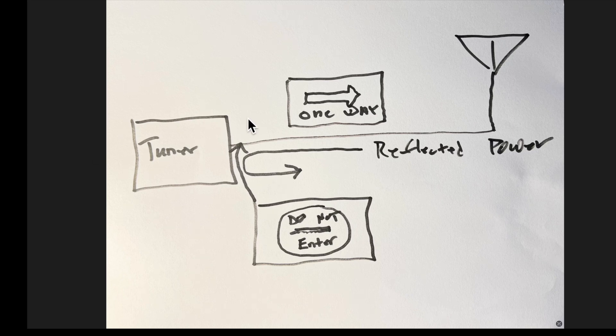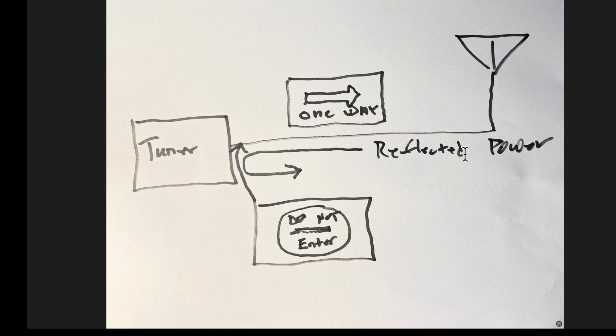So what happens to reflected power? This is where the myths come in. Some say it all turns to heat in the transmission line, or at the source, like an antenna tuner. Here's why neither is true: the impedance match created by the tuner is only one way — from the source to the load. So when a reflected wave arrives back at the antenna tuner, it sees either a very high or very low impedance mismatch, like either a short or open circuit. So it all gets reflected back to the antenna — it is blocked from getting past your antenna tuner.